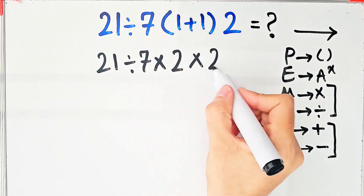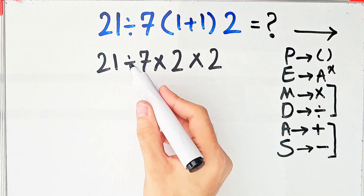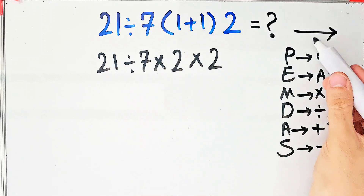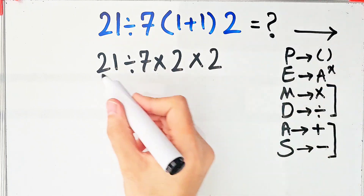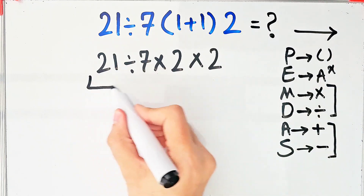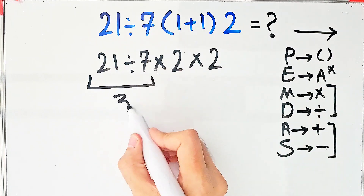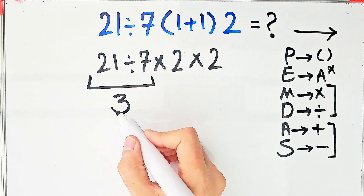Now we have multiplication and division, and because multiplication and division have the same level of priority, we start from the left and simplify. 21 divided by 7 equals 3.